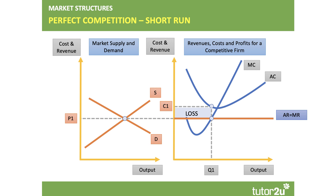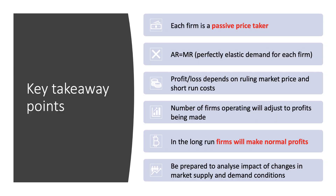The issue then becomes: do they carry on producing? That depends on whether the price is higher than the shutdown price, which is the variable cost of production. Key takeaways: each firm in this market is a passive price taker — each firm faces a perfectly elastic demand curve. The amount of profit or loss depends on the prevailing market price and the short-term cost of each firm. In the long run, the number of firms will adjust, and in long-run equilibrium all firms make normal profits.